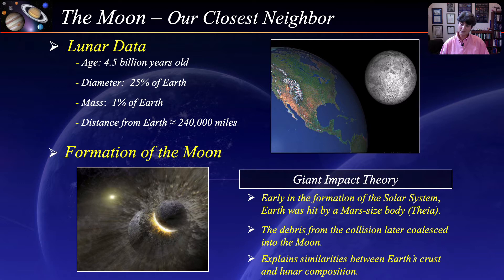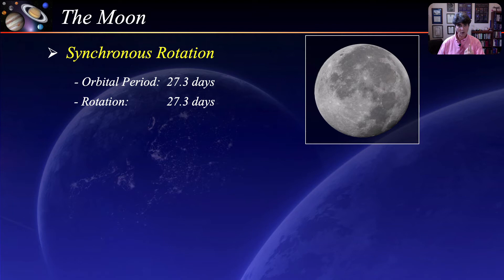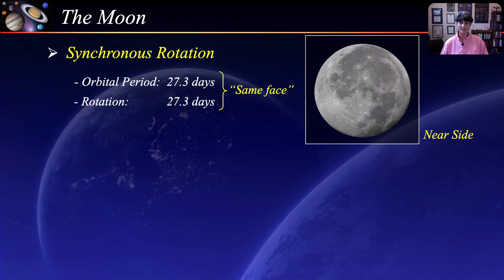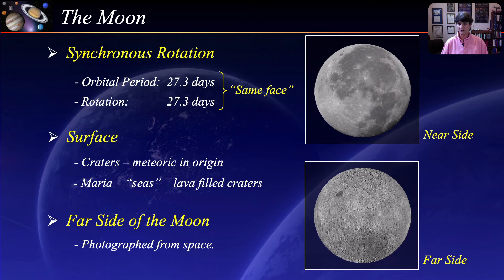The Moon is in synchronous rotation, meaning the time it takes to revolve around the Earth equals the time it takes to complete one rotation about its own axis — this is why we always see the same face of the Moon. The side we see from Earth is called the near side. The surface of the Moon is characterized by impact craters and maria, or seas, which are actually lava-filled craters. Although we cannot see the far side of the Moon from Earth, it has been photographed from space and is much more heavily cratered than the near side.